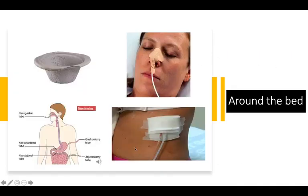Looking around the bed, you might spot vomit bowls, an NG tube, or abdominal drains if the patient is post-surgical. You might see other tubes such as a gastrostomy tube, nasogastric, nasoduodenal, or nasojejunal tube — though you wouldn't know which just by looking; NG tubes are most common. The patient might also have a jejunostomy tube. It's worth learning the rough positions of where you would find each tube.